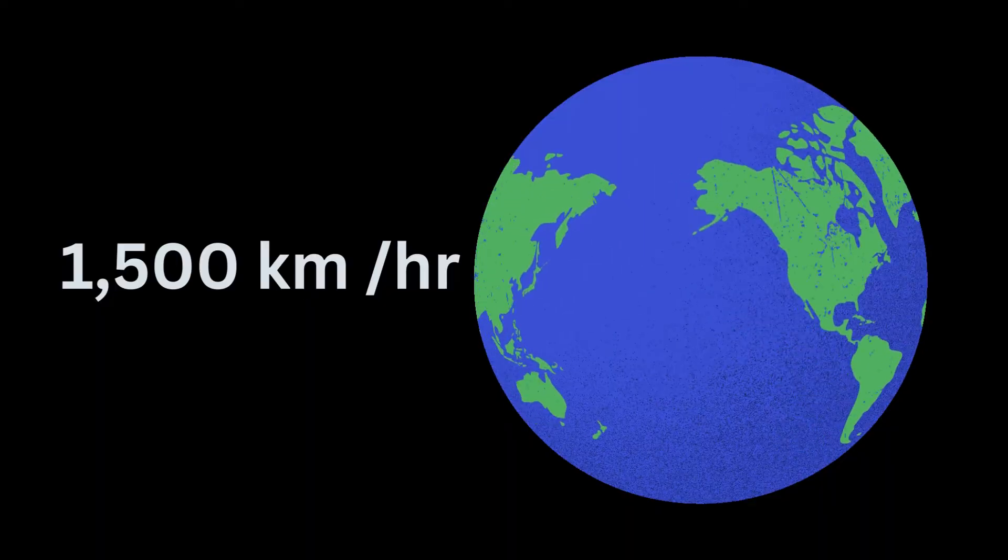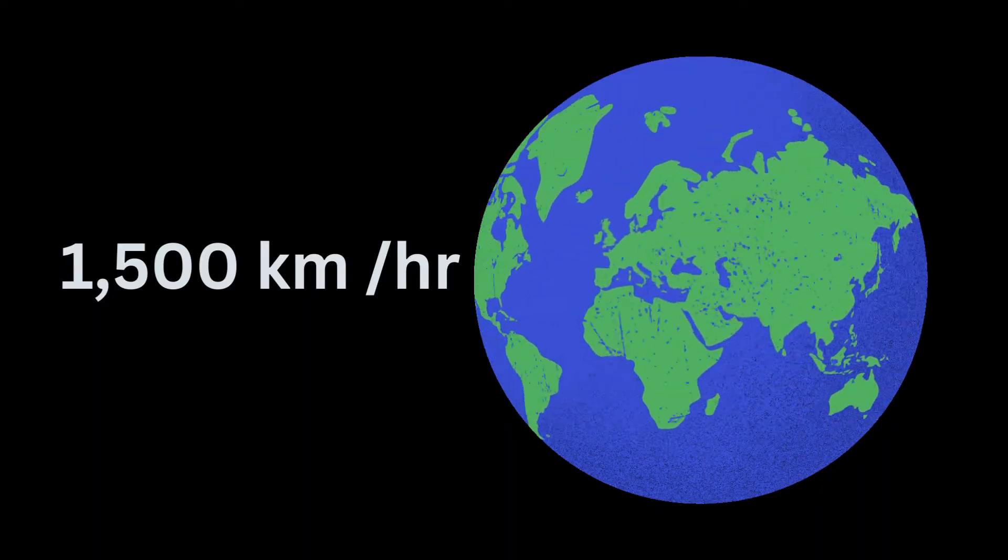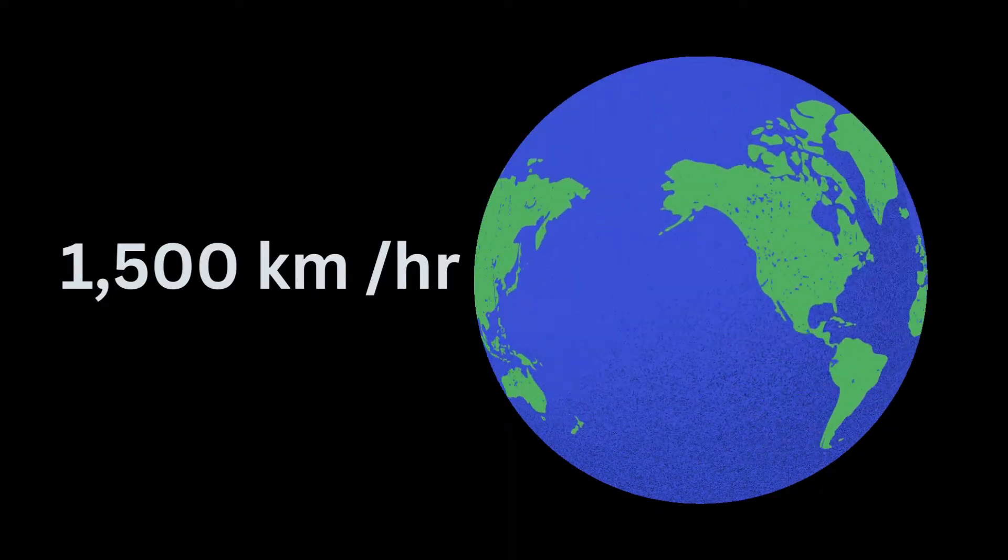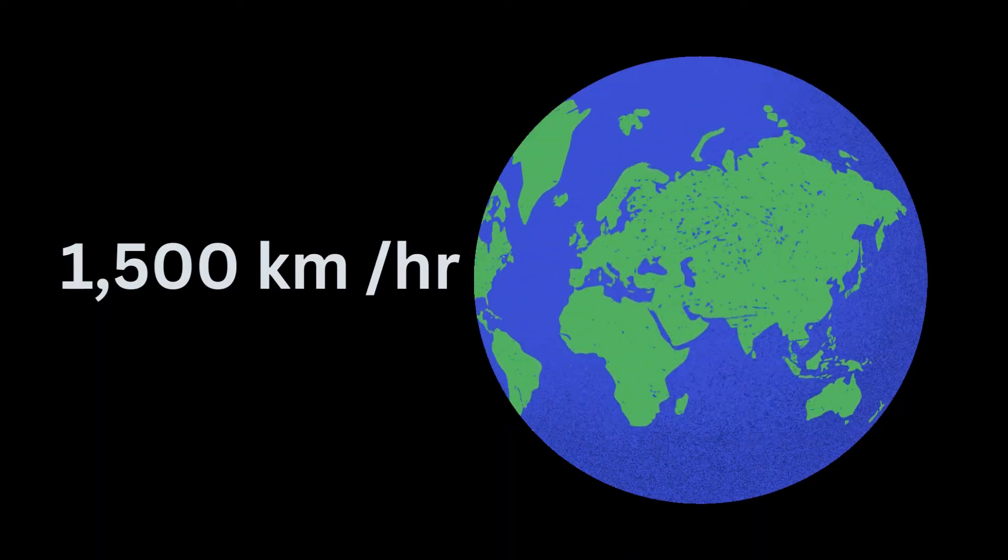It takes the Earth 24 hours, or one day, to make one complete rotation around its axis. The Earth spins at more than 1,500 kilometers an hour—that's more than four times faster than the top speed of a racing car.